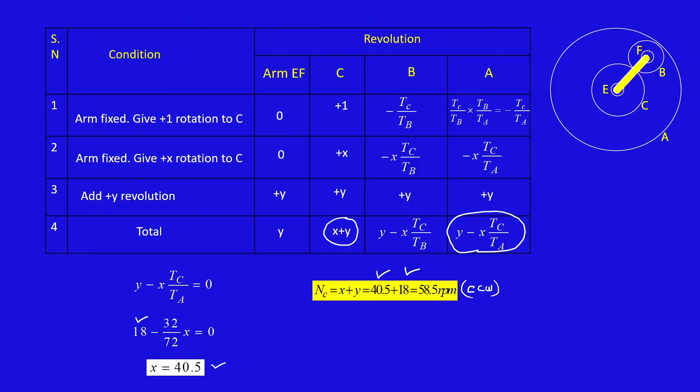Next we need to find out the speed of gear B. NB equal to Y minus X TC by TB. Here Y value 18, X value 40.5, then TC 32, TB 20. When you substitute all these parameters, you will get NB equal to minus 46.8 RPM. Here that minus sign represents clockwise rotation. The speed of gear B equals 46.8 RPM in clockwise direction.